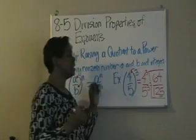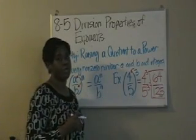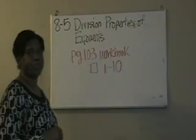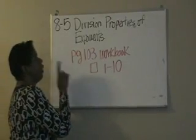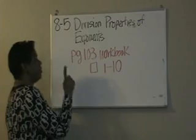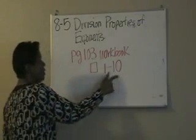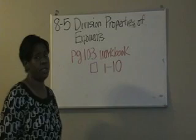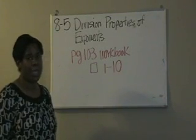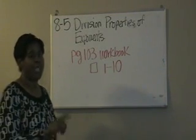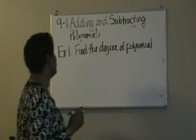Your instructions would say simplify. When I come back, I'm going to give you the assignment you need to do in your workbook for this section. The assignment for A-5, Division Properties of Exponents, is page 103 in your workbook, problems 1 through 10. Please make sure you've written down all of the notes for this section when you turn it in. If you're homebound or going ahead, you're going to need these notes and this assignment for your grade.